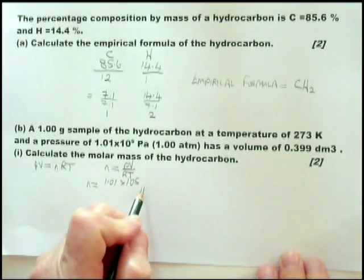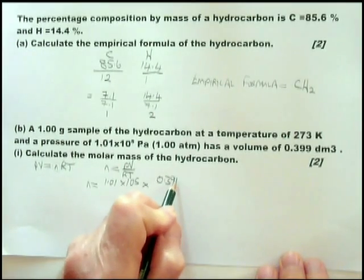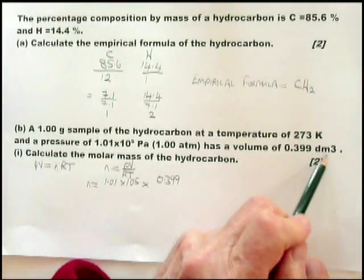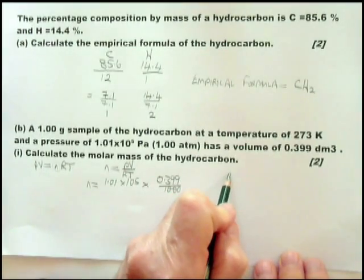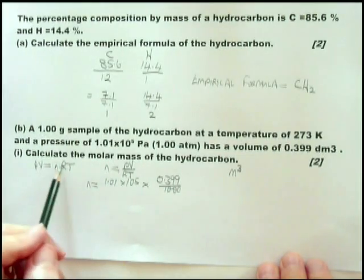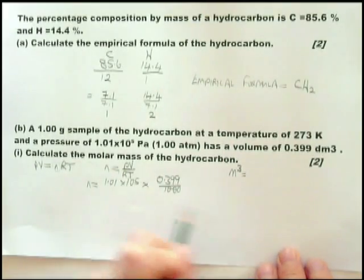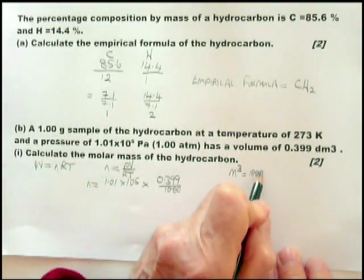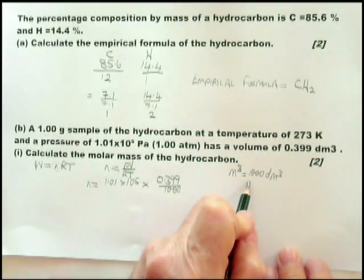Times the volume—now the volume is given to you in decimeters cubed. You have to convert that to meters cubed. This is something that students get a little confused with. The volume in this equation is meters cubed, and that equals a thousand decimeters cubed. It also equals a million centimeters cubed.